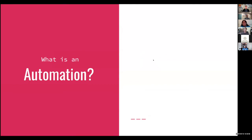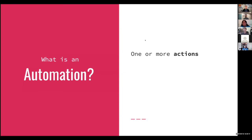You have actions that you perform — actions are primarily going to be on your base, or possibly sending data out to other tools like Google services and things like that. Those actions are executed in a sequence. They try to remind you of that sequence via the design of the interface. And it's all driven by a trigger. Each automation has a single trigger that drives all the actions, running one after the other all the way to the end.